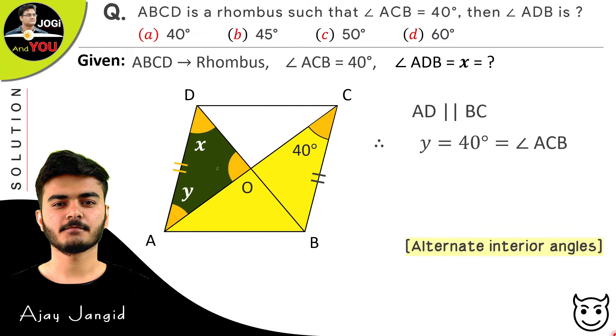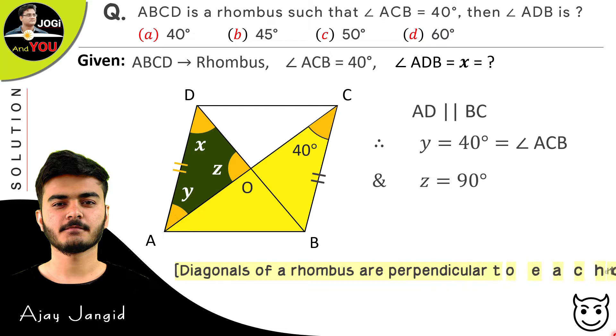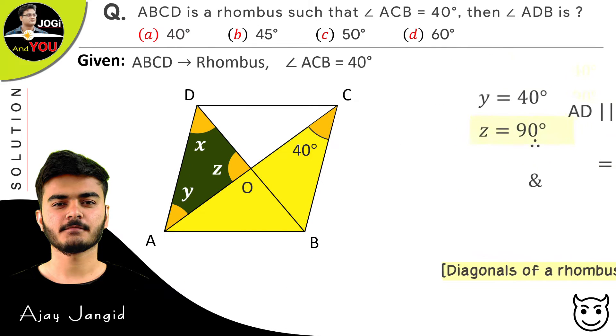Now the Z angle we have in the green triangle, we will find it. And for that, we have another property of rhombus. Before using that property, just see how much this angle is. This Z angle is 90 degrees. And the property of this angle is: diagonals of a rhombus are perpendicular to each other. So now we have the values of Y and Z which are 40 degrees and 90 degrees. Just take aside all the things from here and just keep the values of Y and Z.